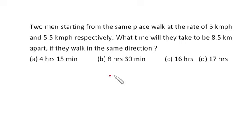That means they are starting from the same point, same time. Okay, now what is the gaining speed of this person? It is half km per hour. Okay, since every hour this person is walking half km more than this particular person.